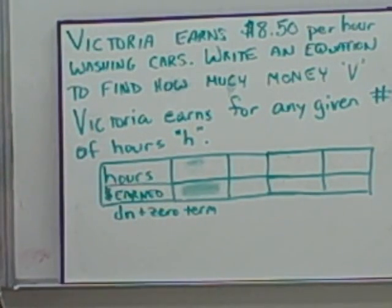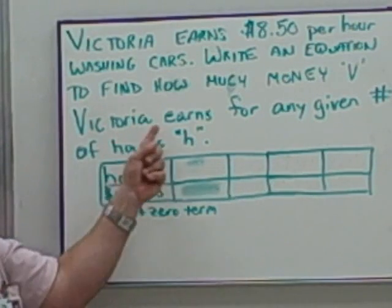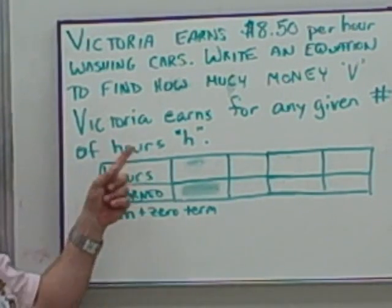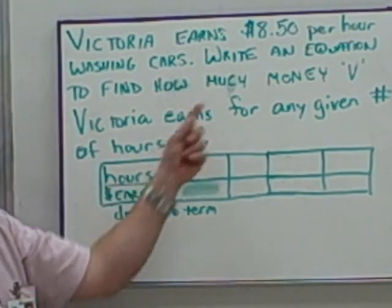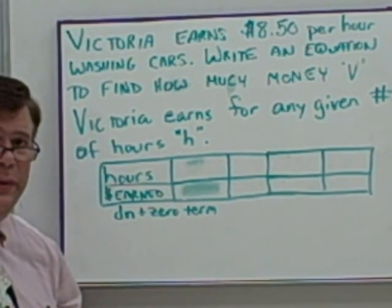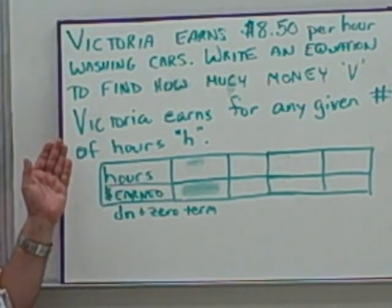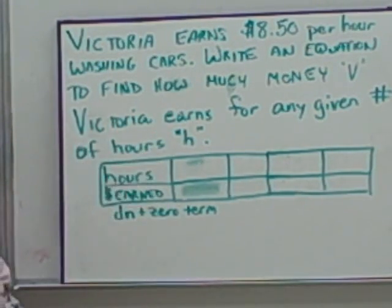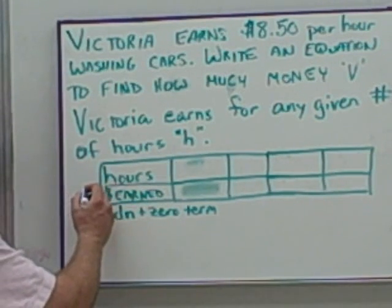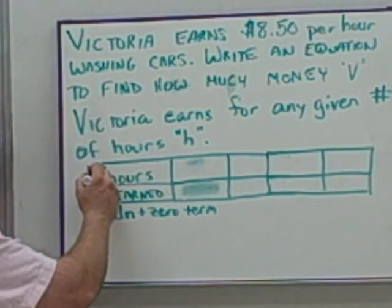Here we have: Victoria earns $8.50 per hour washing cars. Write an equation to find how much money V — Victoria — earns for any given number of hours H. The V and the H here declare the variables they want you to use in your equation. V is the money Victoria earns, and H is the number of hours.